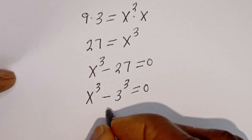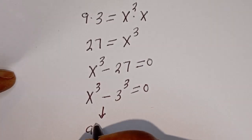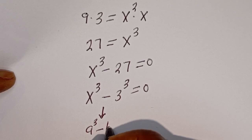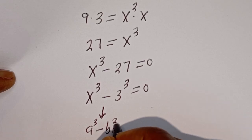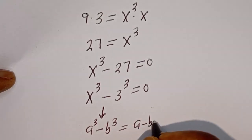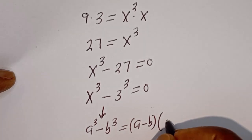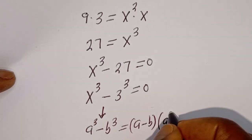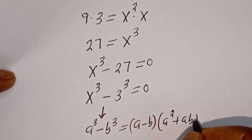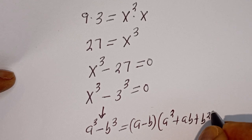Take note of this rule: if you have a to the power of 3 minus b to the power of 3, this is equal to (a minus b) bracket (a squared plus ab plus b squared).